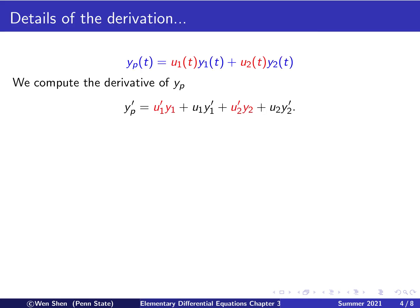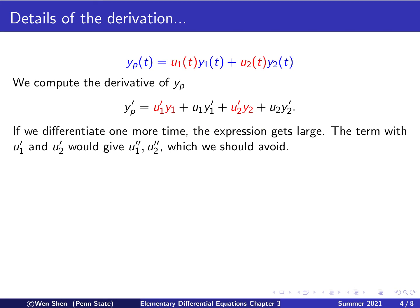To begin with, we seek a particular solution of the form u1 y1 plus u2 y2. Since we are going to plug this into the equation, we need to compute the derivative. So yp prime, by the product rule applied twice, gives us: u1 prime y1 plus u1 y1 prime, plus u2 prime y2 plus u2 y2 prime. Now we see that the equation is second order, so we will have to compute yp double prime. If we keep this form and differentiate one more time, the expression gets really complicated with many many terms.